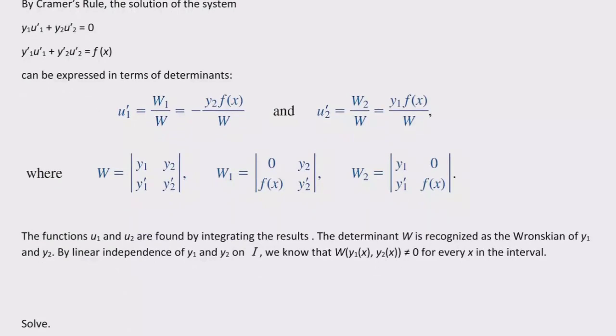All right, so functions U1 and U2 are found by integrating the results. The determinant is recognized as the Wronskian of Y1 and Y2. And by that idea of linear independence on Y1 and Y2, then that says the Wronskian of those two functions would not equal to zero. That just simply means they're linearly independent.